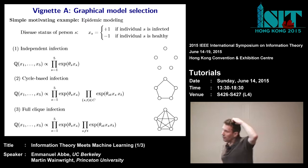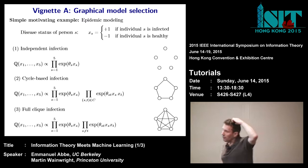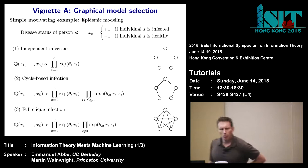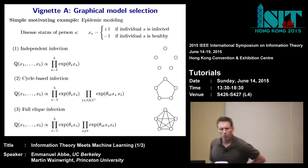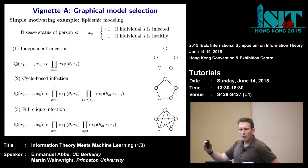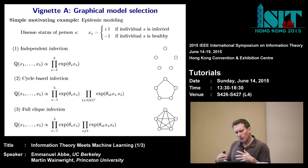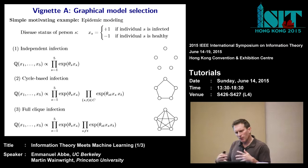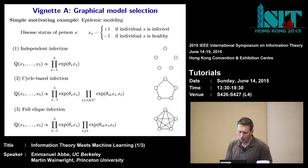Our first problem concerns graphs. One motivation is: suppose you wanted to model an epidemic, say how MERS might spread. You would have a population of individuals, assign each individual a binary variable — plus one if infected, minus one if healthy. What you'd expect is that there would be a certain spatial structure to how people got infected, depending on social interactions, who's interacting with whom, which areas are highly connected by transportation links, and so on.